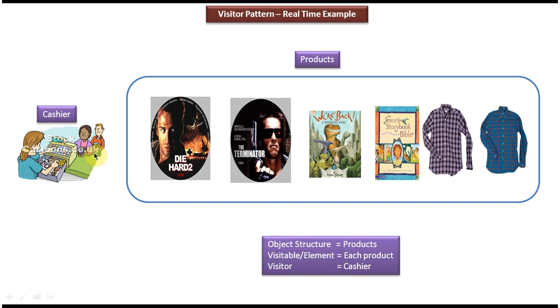Here, the cashier is nothing but a visitor object, and each product is nothing but a visitable or element object, and the products collection is nothing but an object structure. So this is the best example of visitor design pattern.